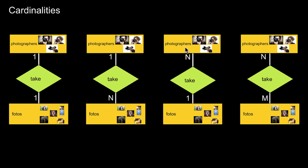Then there's N-to-one: a photographer can take at most one photo — still a weird business model — but now a photo can be taken by an arbitrary number of photographers. And finally N-to-M, which is equivalent to writing no cardinality at all. A photographer can take an arbitrary number of photos, and a photo can be taken by an arbitrary number of photographers — no constraint whatsoever.